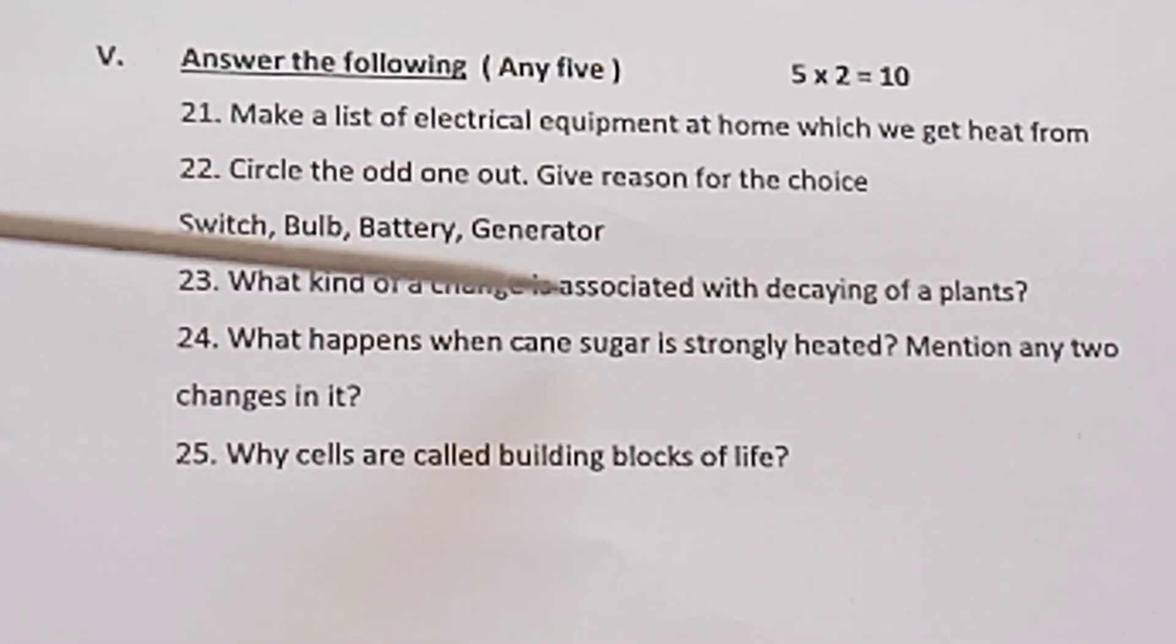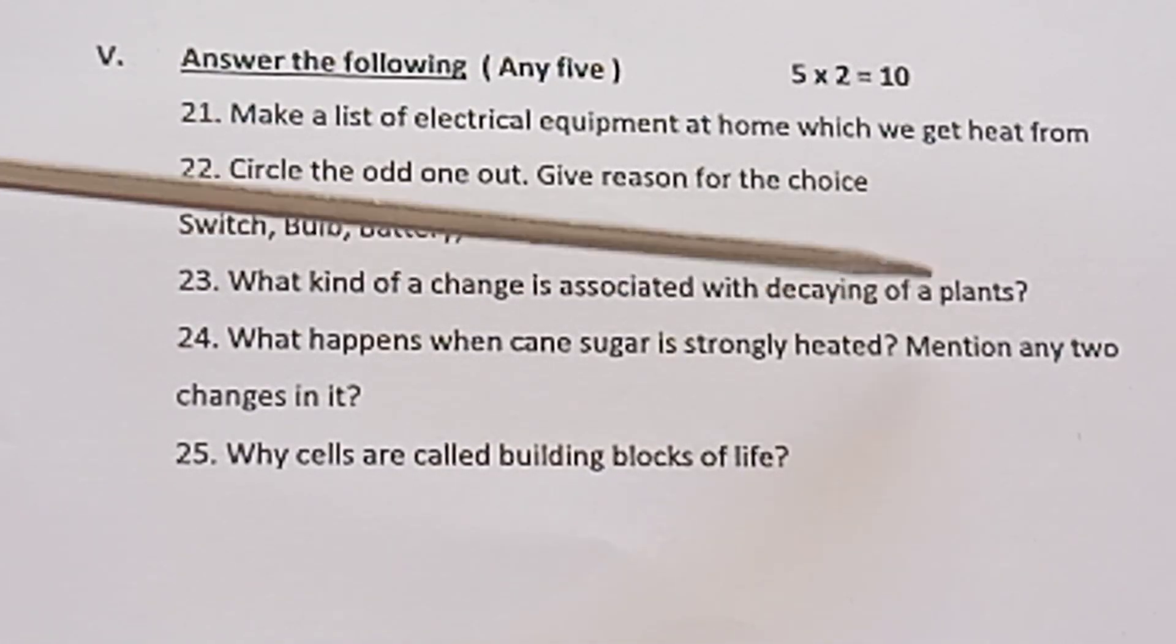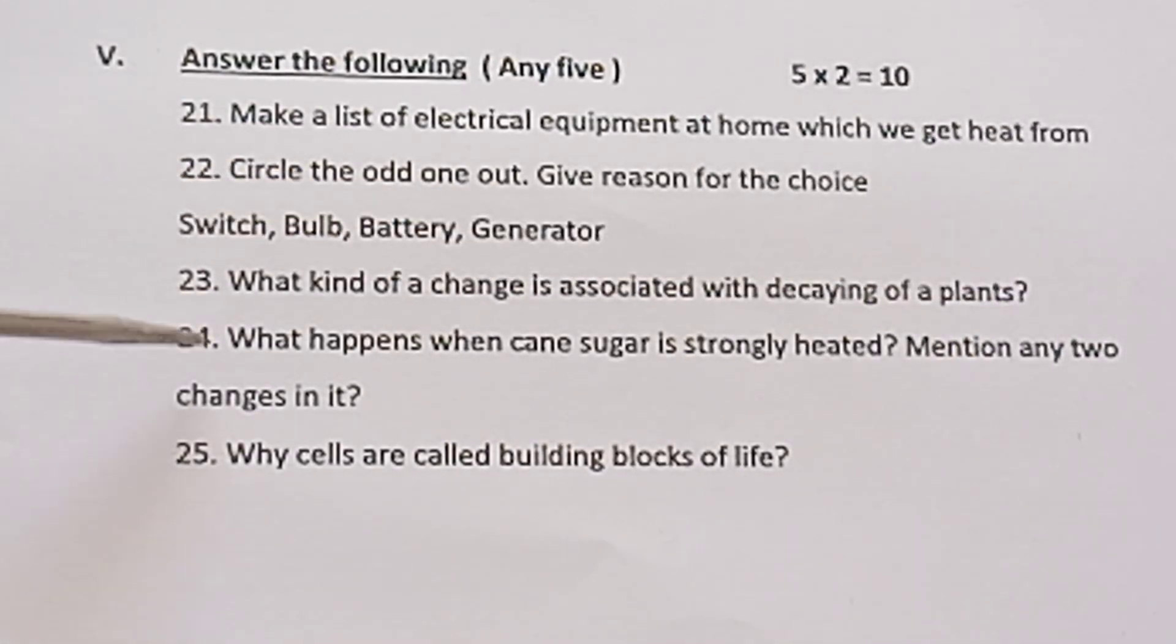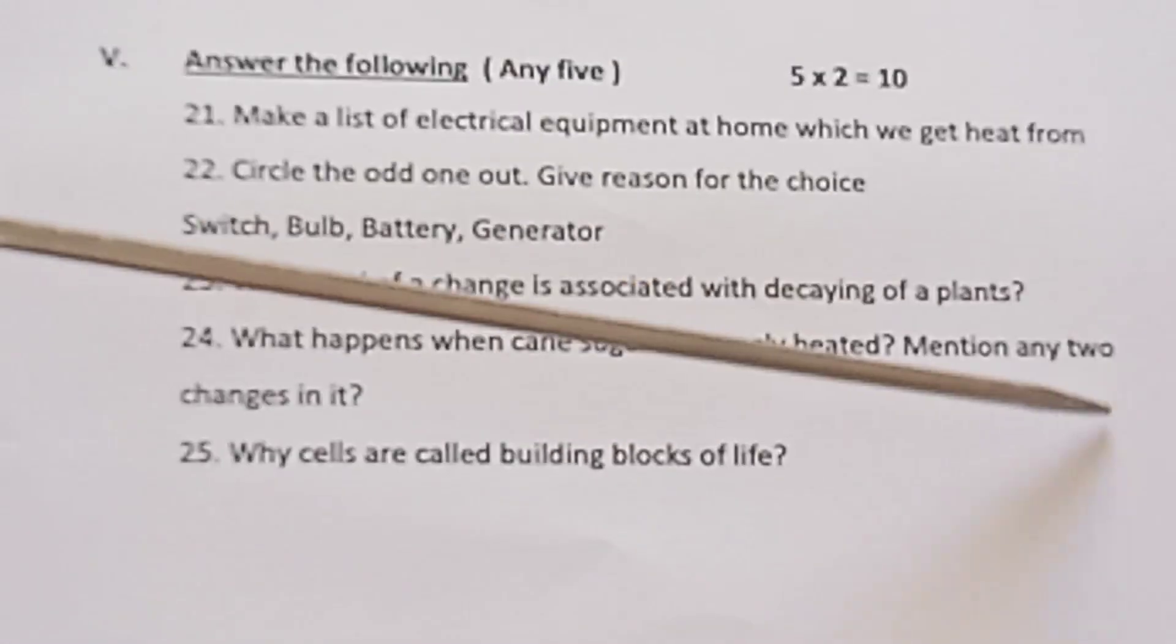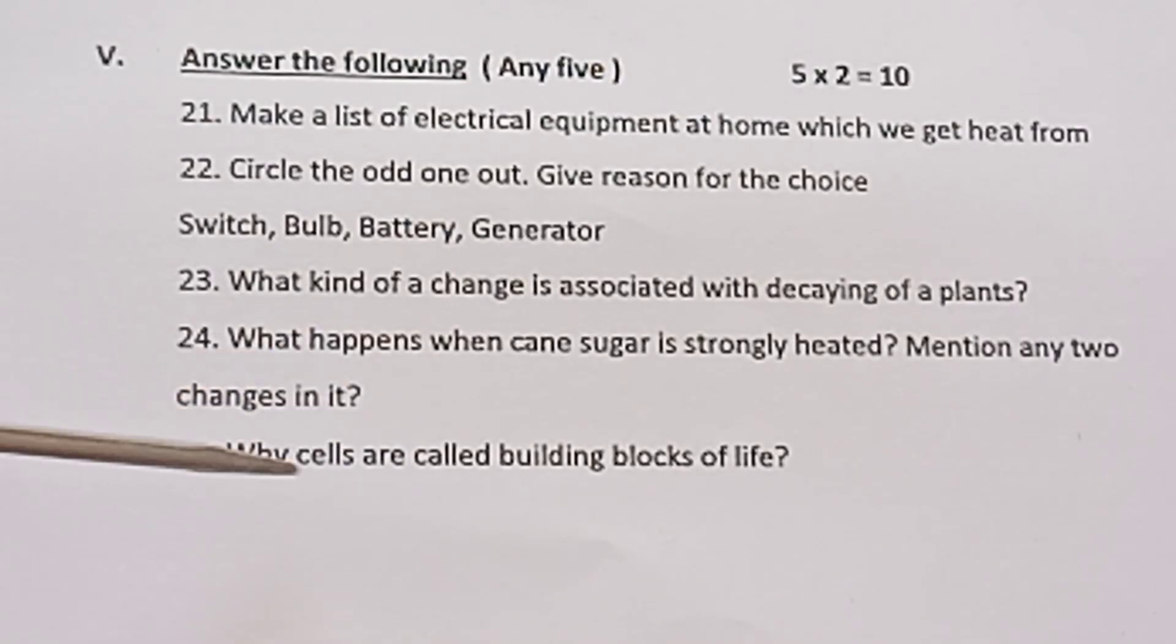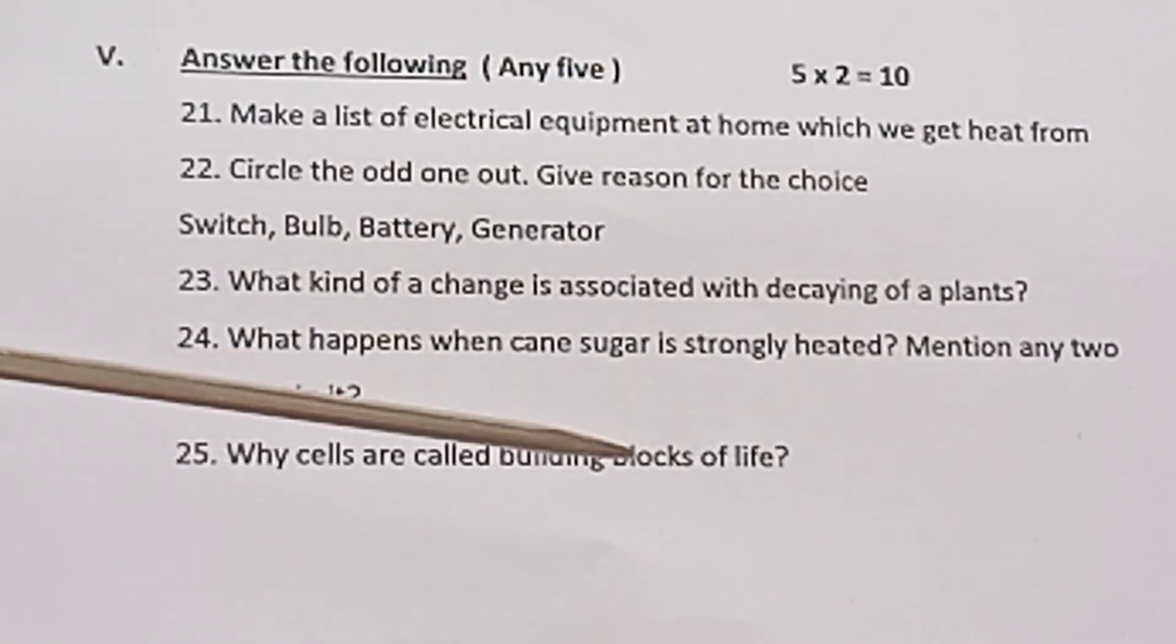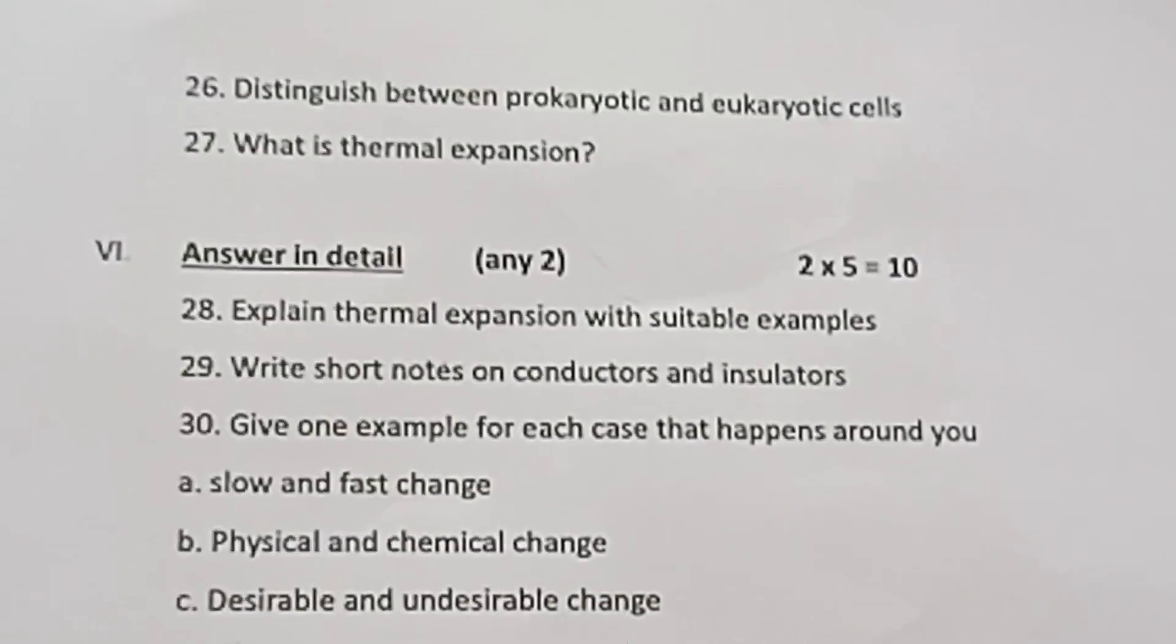Question 23: What kind of a change is associated with decaying of a plant? Question 24: What happens when cane sugar is strongly heated? Mention any two changes in it. Question 25: Why are cells called the building blocks of life?